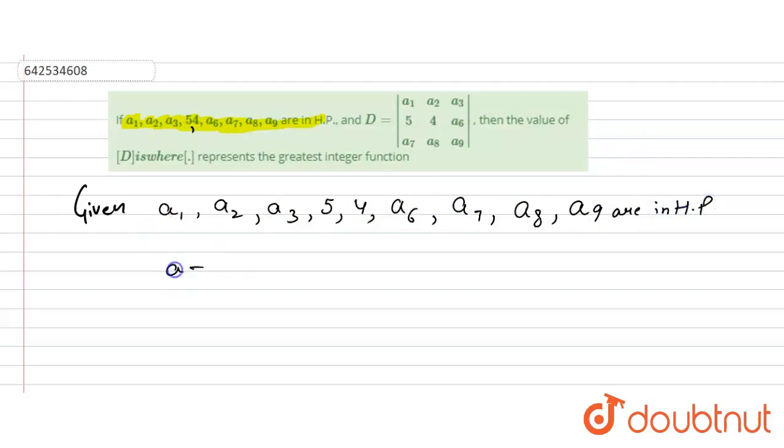And it means A plus 3D will be equal to 1 by 5 and A plus 4D is equal to 1 by 4, where A and D are first term and common difference of corresponding AP.